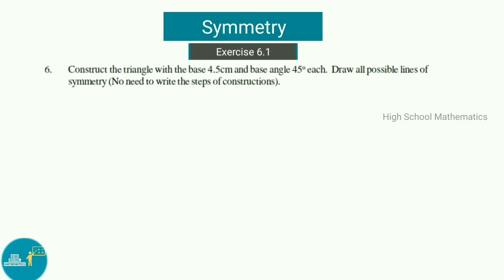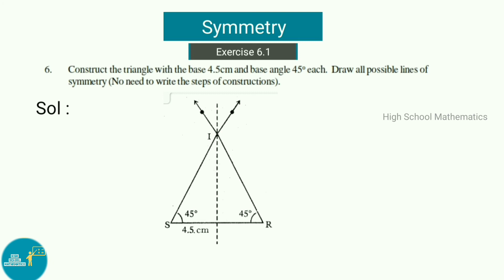Question 6: Construct a triangle with base 4.5 centimeters and base angles of 45 degrees each, then draw all possible lines of symmetry. We draw a line segment SR of length 4.5 centimeters. From S, we mark an angle of 45 degrees and draw a line through it. From R, we mark an angle of 45 degrees and draw a line so that both lines meet at point I.